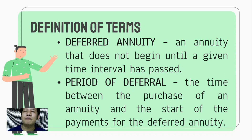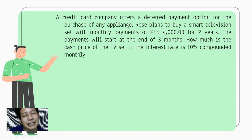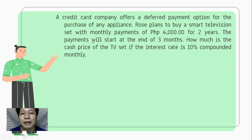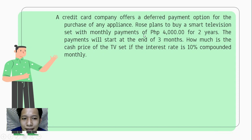So to better understand the concept of deferred annuity, let us have an example. Suppose a credit card company offers a deferred payment option for the purchase of any appliance. Rose plans to buy a smart television set with monthly payments of 4,000 pesos for 2 years. The payments will start at the end of 3 months. How much is the cash price — that is, the present value — of the TV set, if the interest rate is 10% compounded monthly? Since the payment interval and interest period are both monthly, this is a simple annuity but deferred.